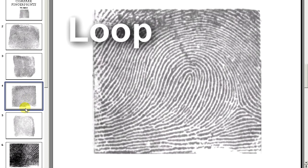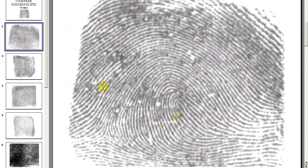The ridges in a loop pattern start on one side of the finger, loop in the middle, and exit on the same side they started. There is usually one core and one delta in a loop pattern. A loop can face either left, like this one does, or to the right, like this one.